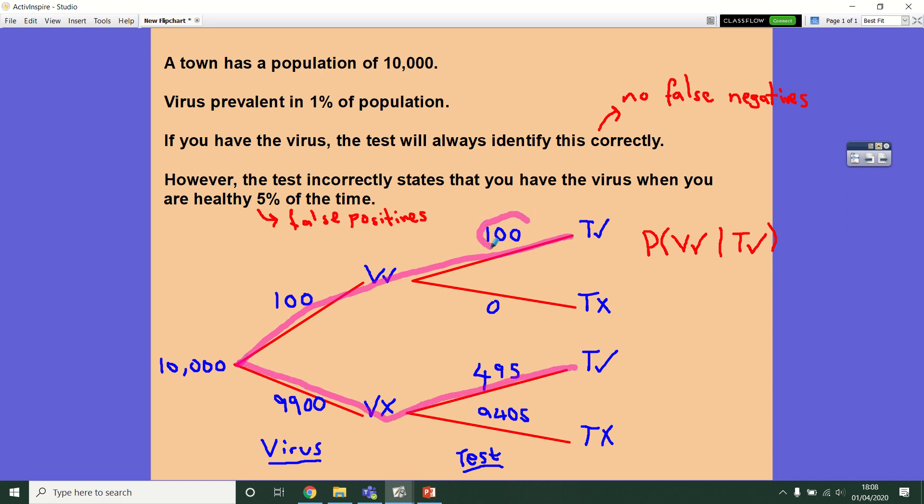So really, it's these individuals here that are the focus of our little investigation. So out of those individuals, that's a total of 595 people. What's the chance that you're in the group of them that have the virus? Well, that's 100 out of the 595.